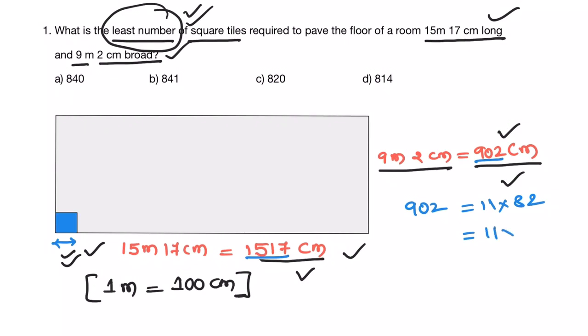Now this is 11 into 2 into 41. 41 is a prime number. I have given the prime numbers list below 100. So 41 is a prime number. Now rearranging this: 2 into 11 into 41.